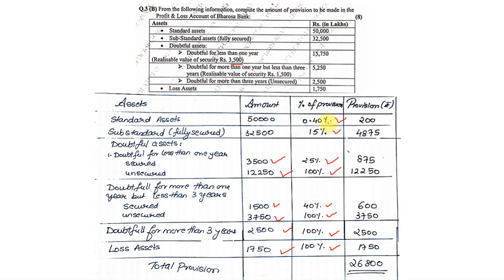Applying the percentages: 50,000 × 0.4% = 200; 32,500 × 15% = 4,875; 3,500 × 25% = 875; 12,250 × 100% = 12,250; 1,500 × 40% = 600; 3,750 × 100% = 3,750; 2,500 × 100% = 2,500; 1,750 × 100% = 1,750. Totaling all these gives a total provision of 26,800 lakhs.